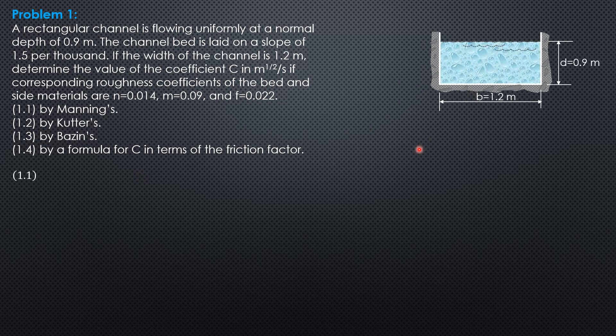So this is the cross-section. 1 over N hydraulic radius to the 1.6. Where the hydraulic radius is area, 1.2 times 0.9 over wetted perimeter, 1.2 plus 2 times 0.9. So this is the wetted perimeter. Therefore, it is 1.2b plus 2 times depth because we have another wetted perimeter here.